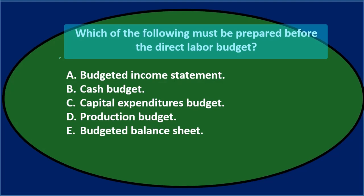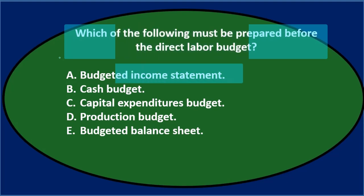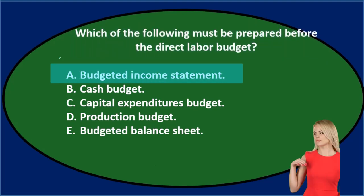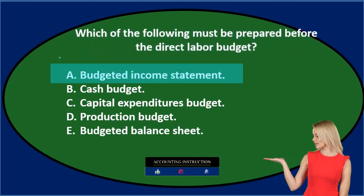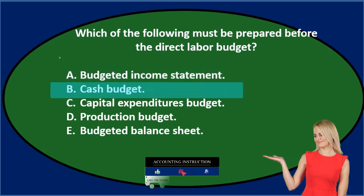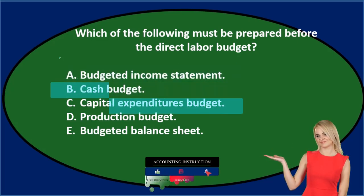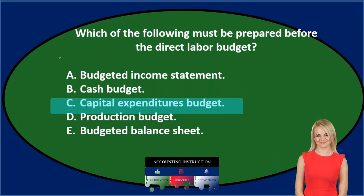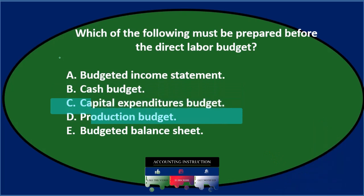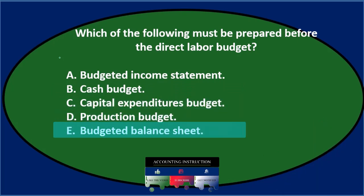Next question: Which of the following must be prepared before the direct labor budget? A, budgeted income statement; B, cash budget; C, capital expenditures budget; D, production budget; or E, budgeted balance sheet.